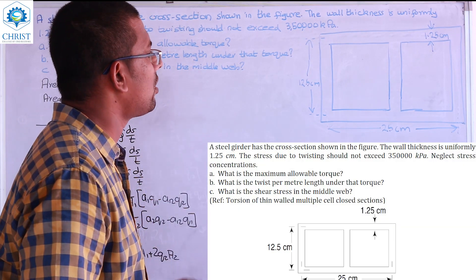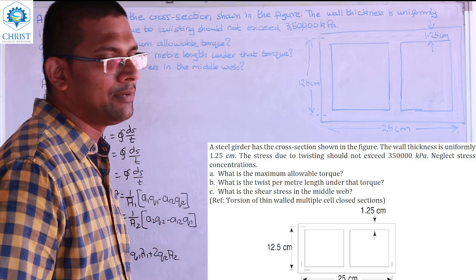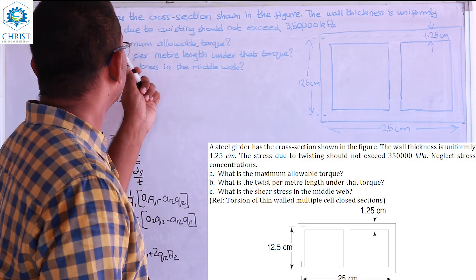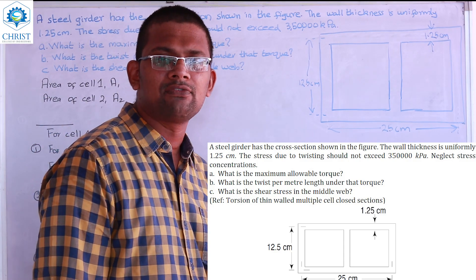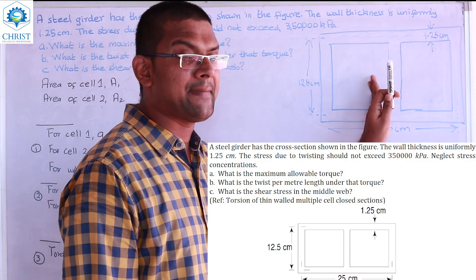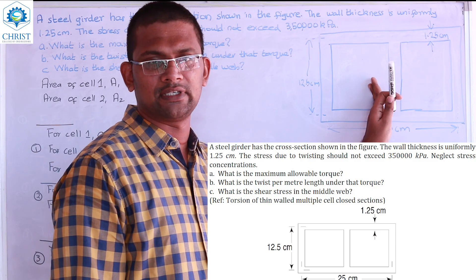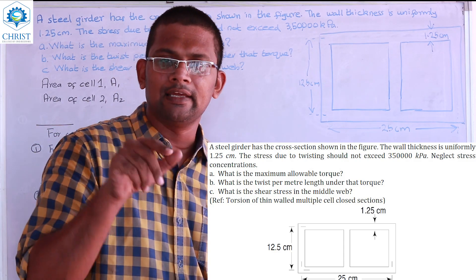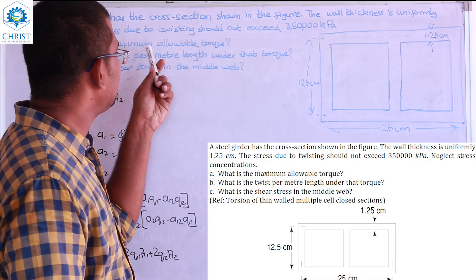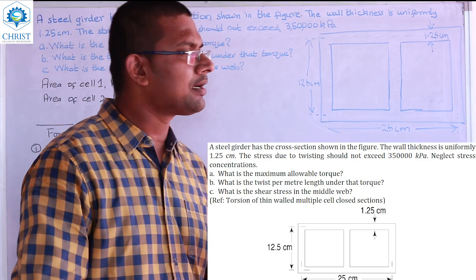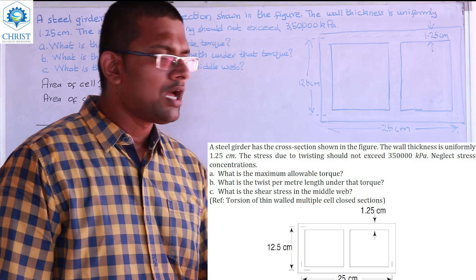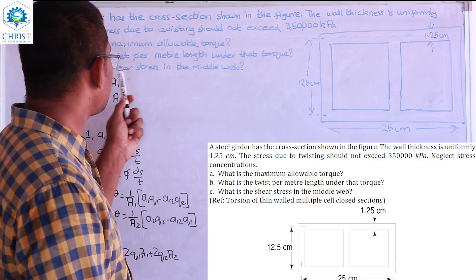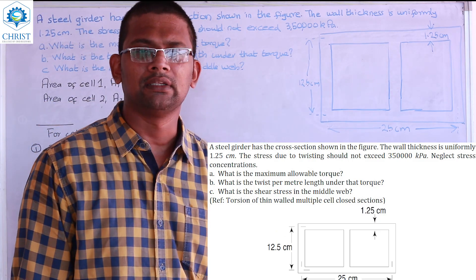A steel builder has the cross-section shown in the figure. The wall thickness is uniformly 1.25 cm throughout. The stress due to torsion should not exceed 3,50,000 kPa. This is the same setup as the previous question. We need to find: first, the maximum allowable torque; second, the angle of twist per unit length; and third, the shear stress in the middle web.